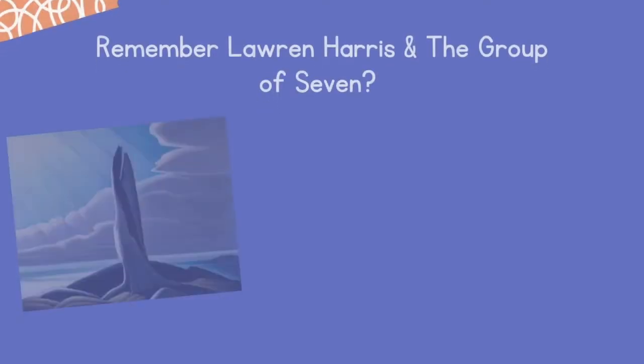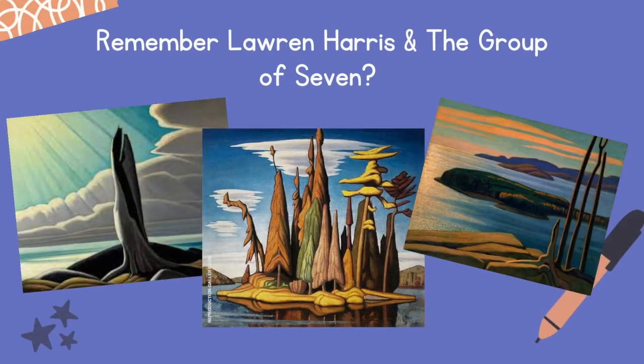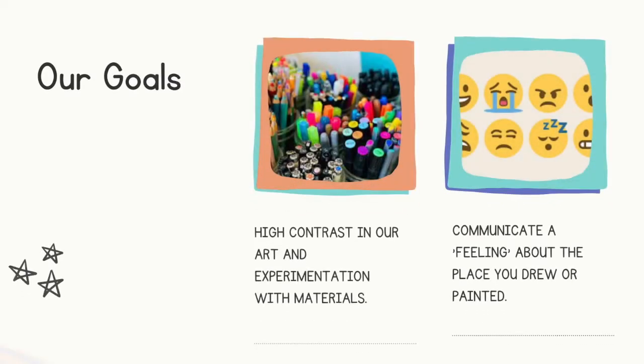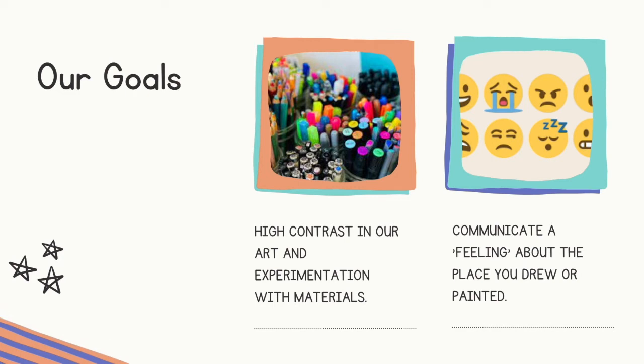Do you remember a couple of weeks ago when we looked at Lawren Harris and the Group of Seven? Lawren Harris's work often has a lot of dark darks and light lights — they're kind of moody. We're going to try to borrow that element of contrast for our own work. Our goals for our end product are to have a piece with lots of dark darks and lots of light lights, experiment with different art materials, and represent our knowledge of regions of Canada to communicate a feeling or information about a place.